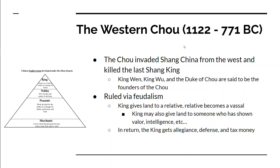Following the Shang are the Western Zhou, who take over in 1122 and rule to 771. There's a little overlap because the Zhou were invaders from western China — they killed the last Shang king in 1050 and then became the undisputed rulers. They ruled using feudalism, which is not that different from European feudalism. The king gives land to a lord who becomes known as a vassal — very often a relative or somebody who showed great valor or intelligence.